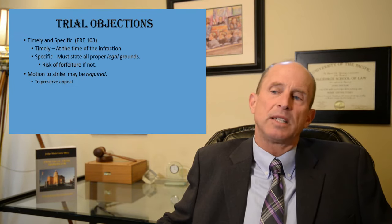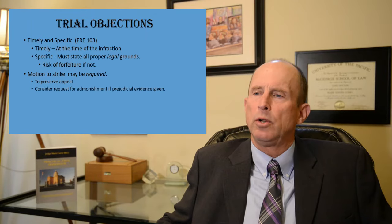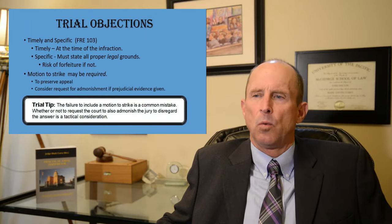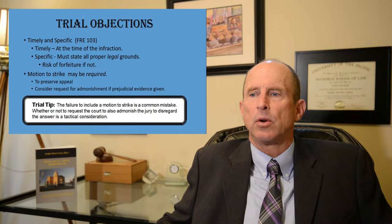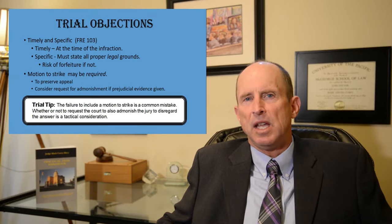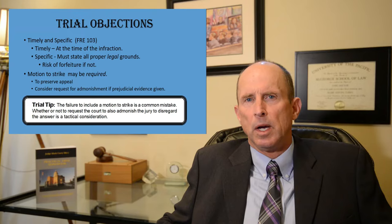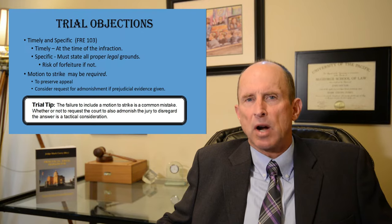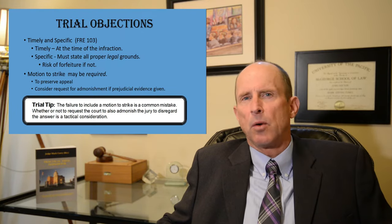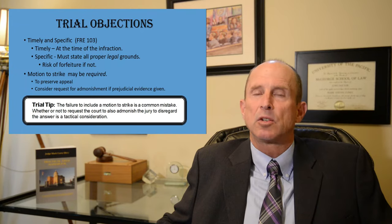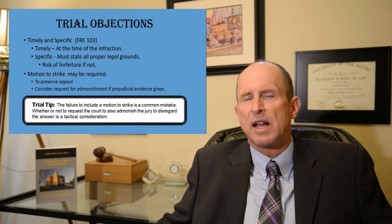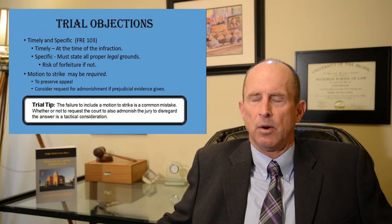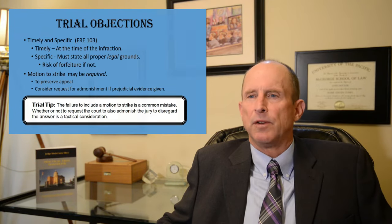Here's a second trial tip: failure to include a motion to strike is a common mistake. Whether or not to request the court to admonish the jury to disregard the answer is a tactical consideration. If the information given was significant and prejudicial enough, you might say 'your honor, I move to strike' and also request the court to admonish the jury to disregard the evidence. That's like ringing the bell one more time for the jurors, so it's a judgment call.